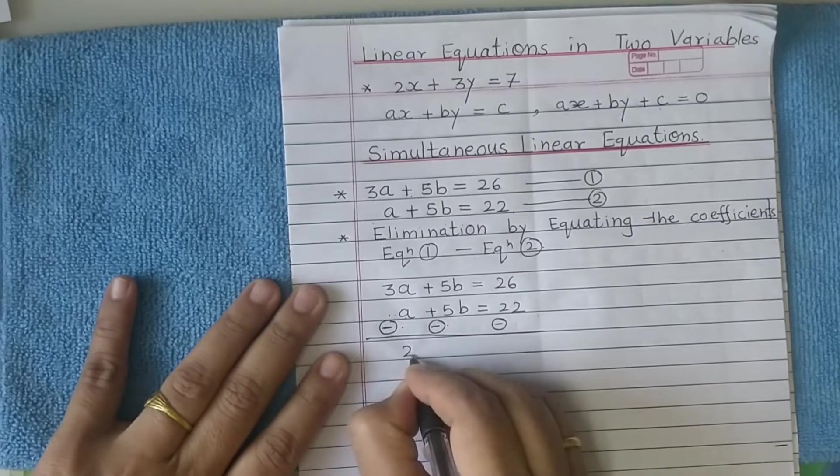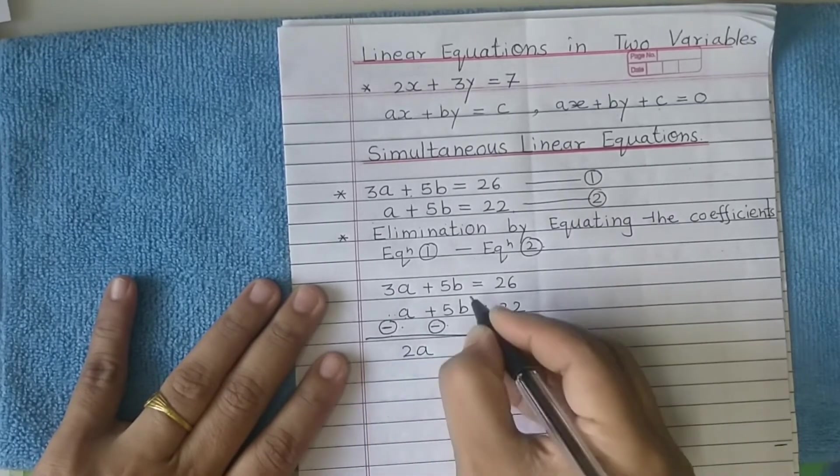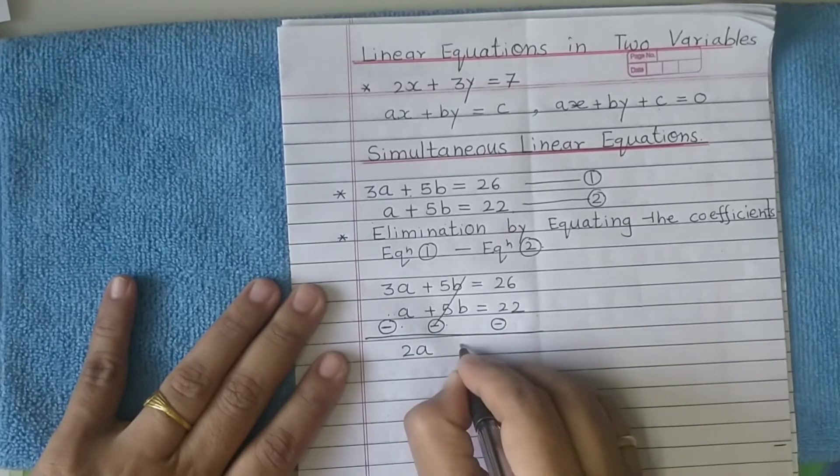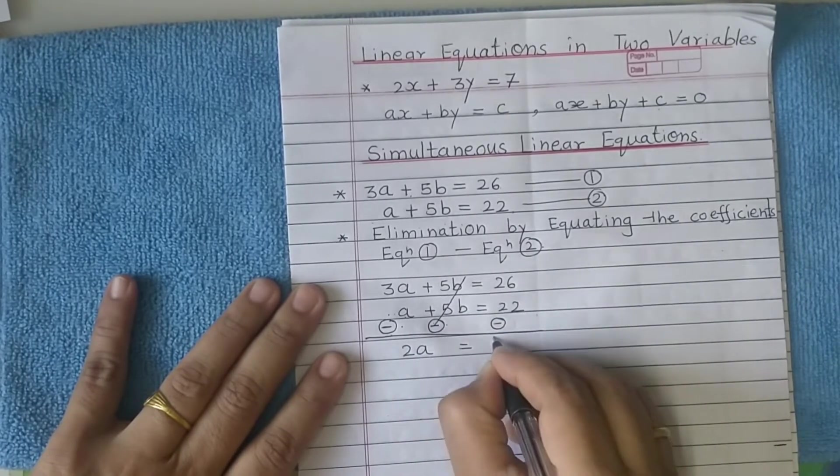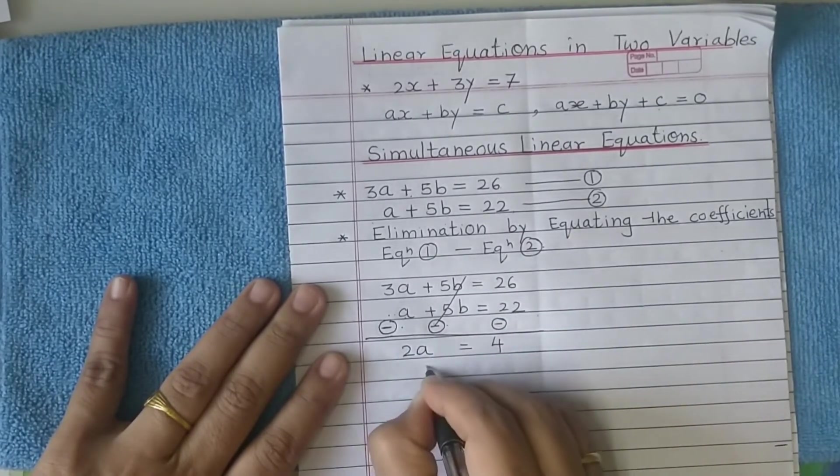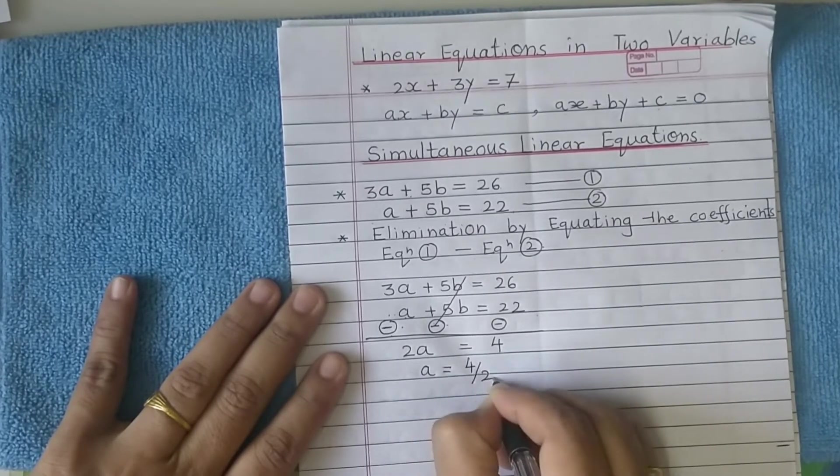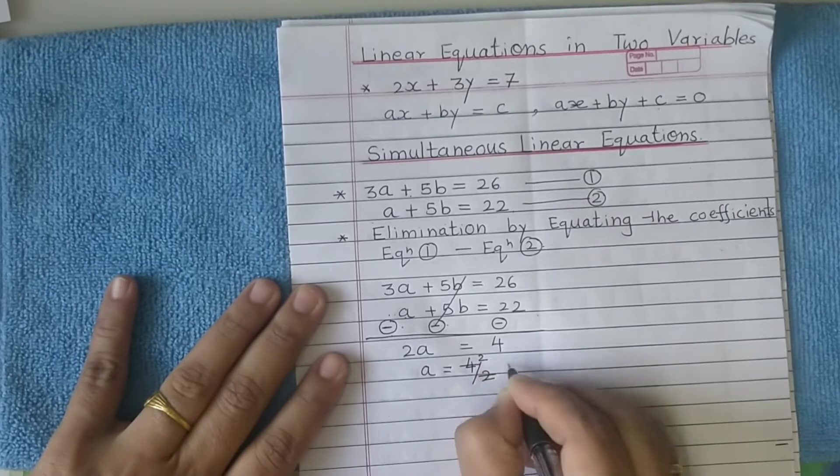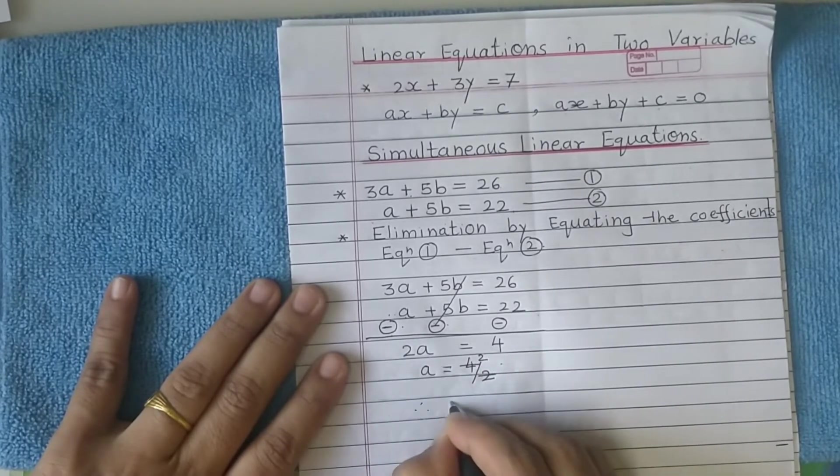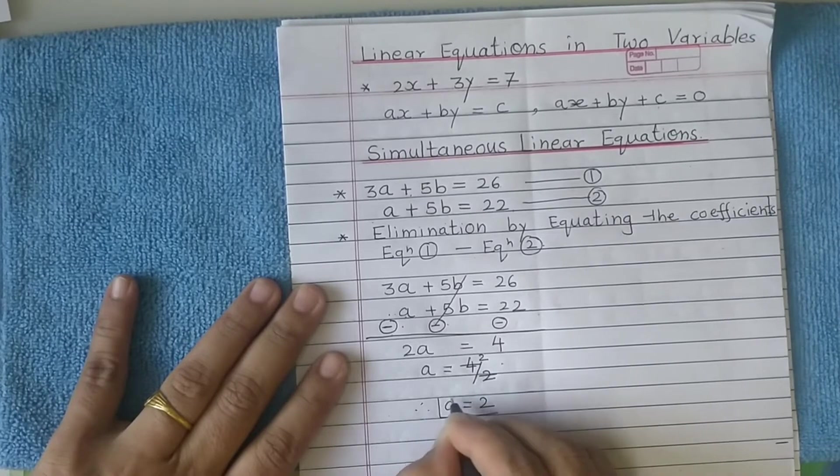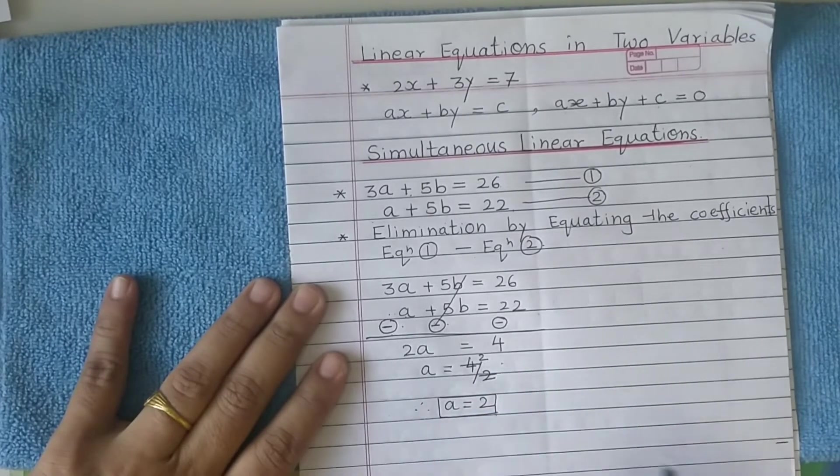That gives you 2a equals 4, so a equals 4 upon 2. Therefore, a equals 2. Value of one variable is found.